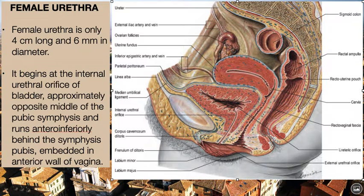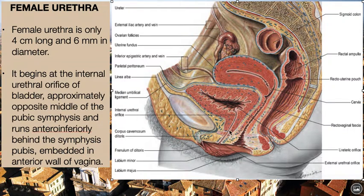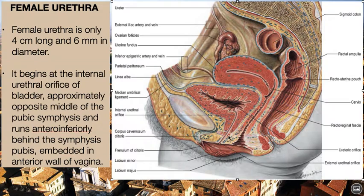Today we will discuss the female urethra. The female urethra is 4 centimeters long and 6 millimeters in diameter. It begins at the internal urethral orifice of the bladder, approximately opposite the middle of the pubic symphysis, running anteroinferiorly behind the symphysis pubis, embedded in the anterior wall of the vagina.